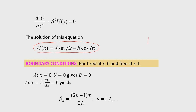Our bar is fixed at x = 0 and free at x = L, excited by a force P. At x = 0 (fixed end), u = 0, so substituting gives B = 0. The solution reduces to U(x) = A·sin(βx).